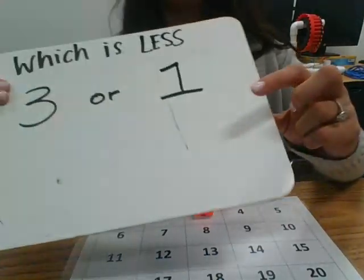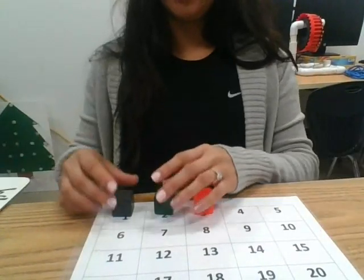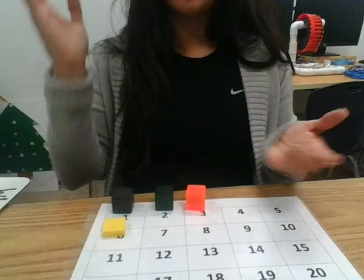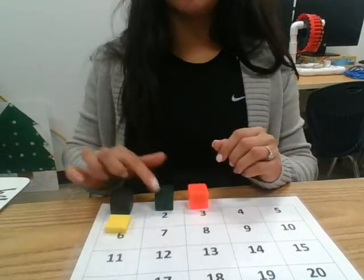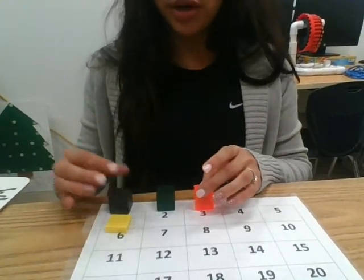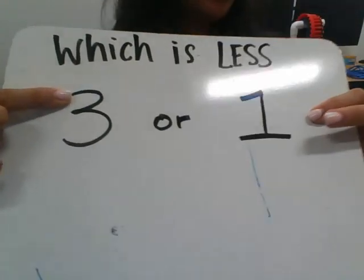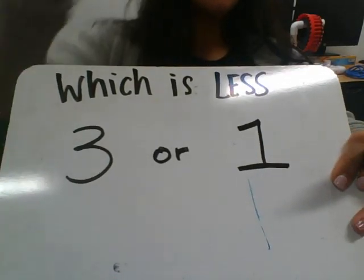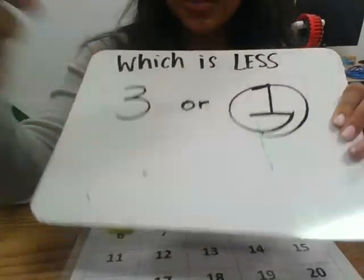Our next number that we're comparing is 1. We always start with number 1, and we're going to stop there because we only want 1. So we have 1, 2, 3 versus 1. Which one is smaller? Which one has a smaller amount — is it 3 or is it 1? If you said that 1 has less, then you are correct. Good job.